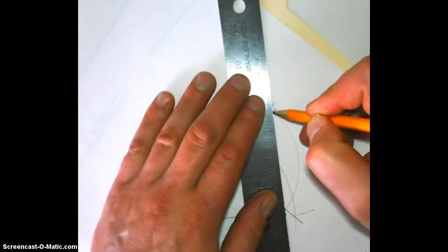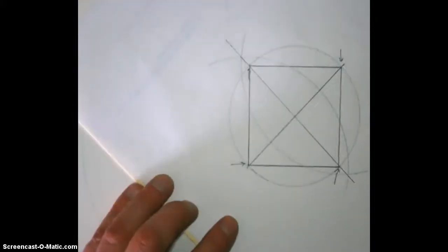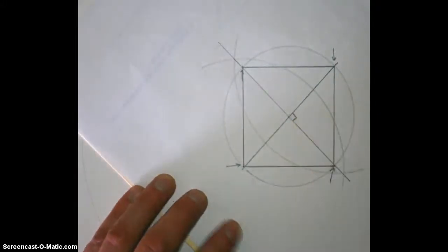And the square already has the diagonals drawn in. And you can see that the diagonals are perpendicular to each other. And there's a couple other things going on.